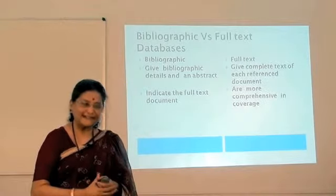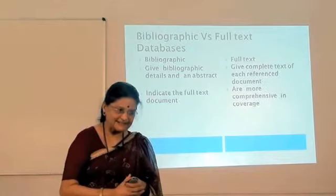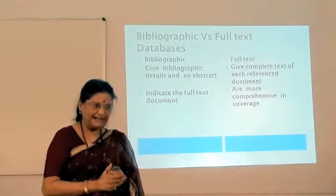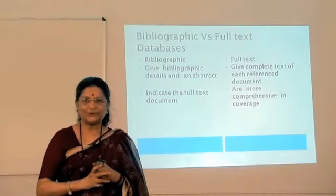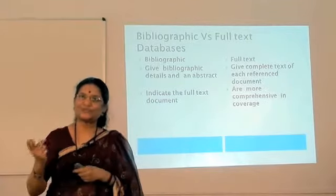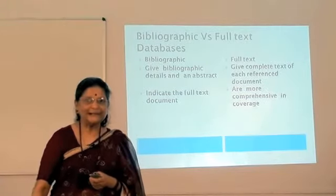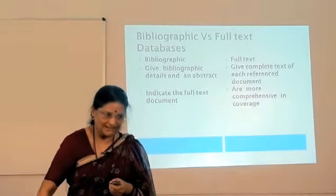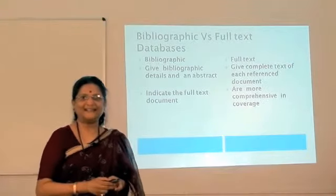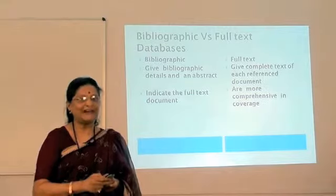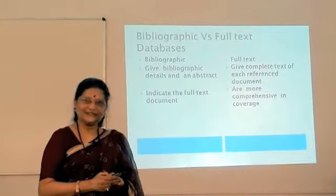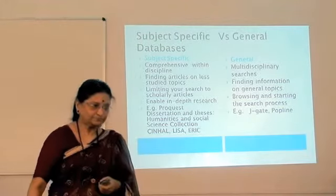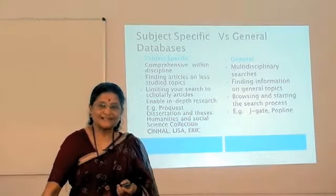Bibliographic databases give only bibliographic details and an abstract. They indicate the full-text document but will not give you the full text — you have to search for it separately. In contrast, full-text databases give the complete text of each referenced document. They are more comprehensive in coverage and more useful; readers normally prefer full-text databases because their time is not wasted.